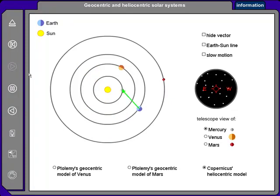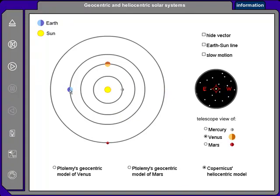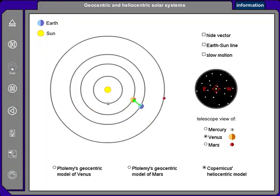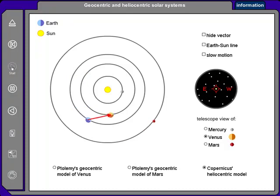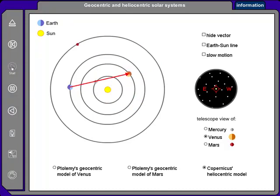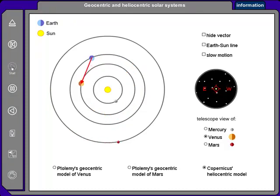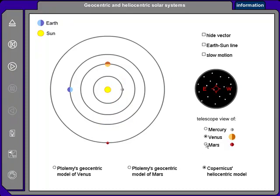Let's reset the animation and try the retrograde motion of Venus. You'll see an arrow moving from Earth to Venus. Right now it's going counterclockwise — Venus is moving eastward — but right now it changes to moving clockwise for a moment as Venus moves westward in retrograde motion. Let that go one more time: right now Venus is in normal motion to the east, but right now the arrow goes clockwise and Venus goes to the west for a second in retrograde motion.